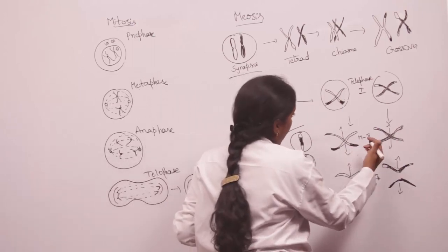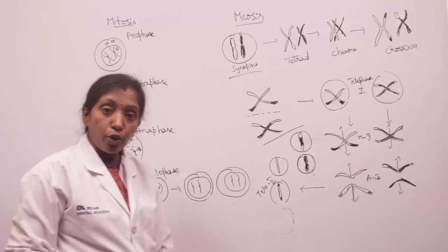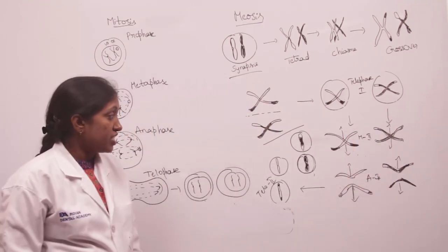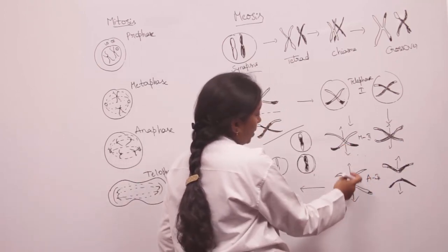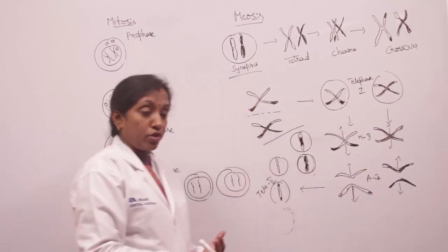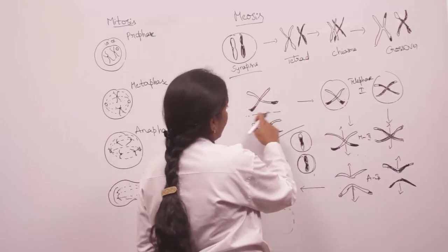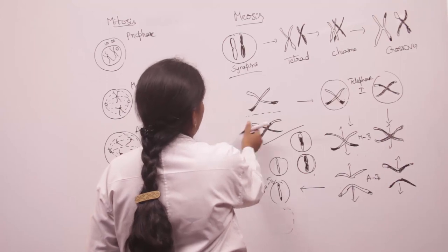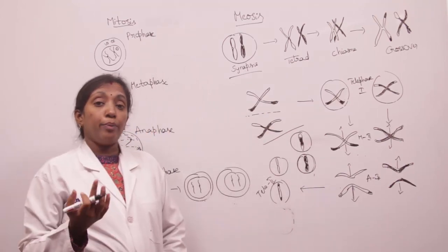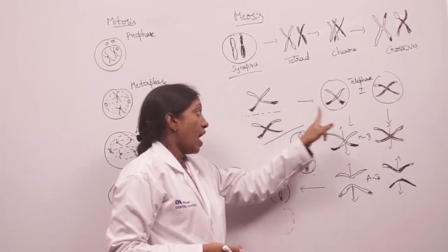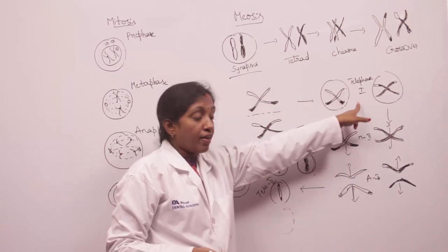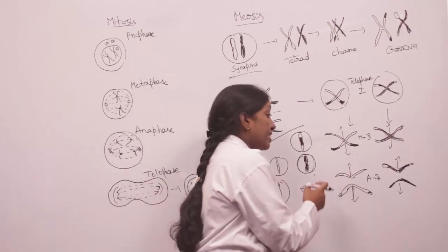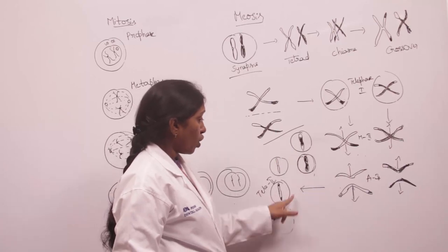In meiosis II — metaphase 2 — the centromeres divide and the chromatids reach the opposite poles. In anaphase 2, the centromere divides and the sister chromatids reach the opposite poles. The centromere doesn't divide in meiosis I, thus maintaining the haploid number of chromosomes. Metaphase 2 is similar to mitosis. The centromeres divide and the chromatids reach the opposite poles, and four haploid gametes are formed.